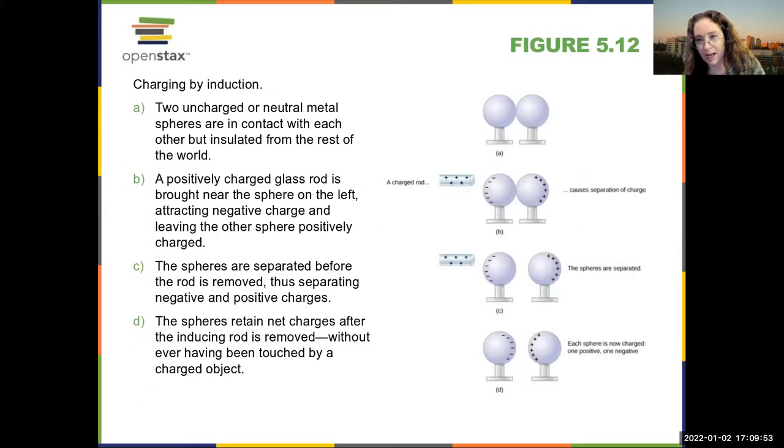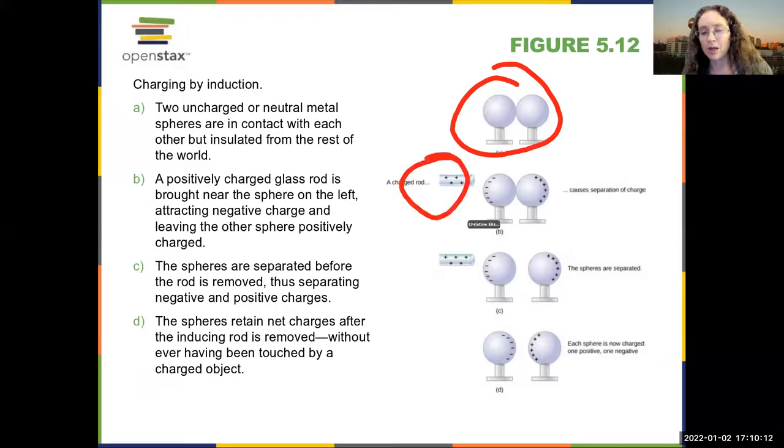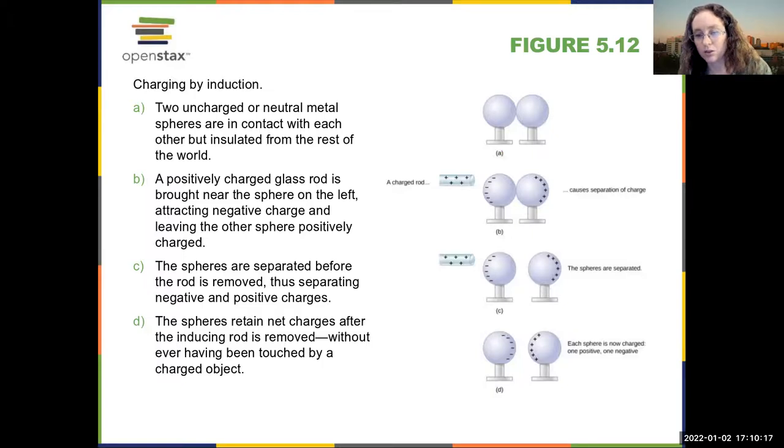Okay, so you can actually use this induced charge to create a permanent charge on something. So to do this, you can take two conducting spheres or any type of conductor that's touching, and you bring something charged nearby. And because when the two conductors are touching, the electrons can move freely between the two of them.